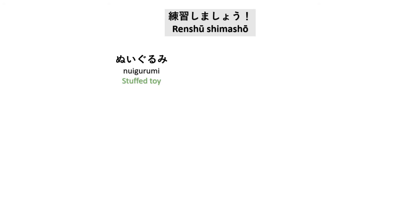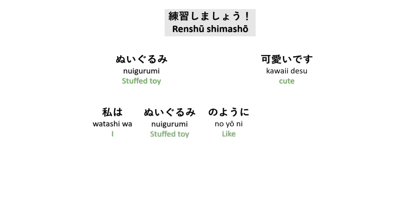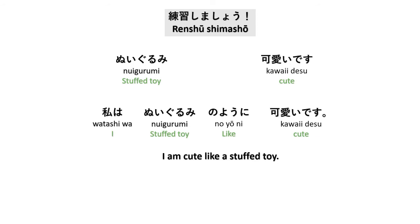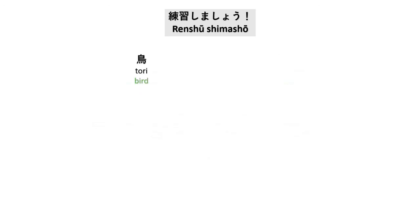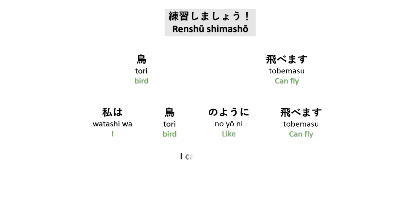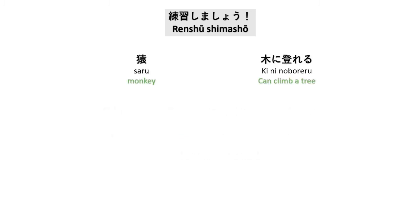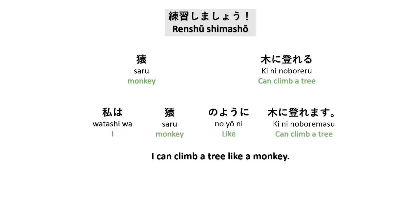Nuigurumi — stuffed toy. Kawaii — cute. Watashi wa nuigurumi no yoni kawaii desu — I am cute like a stuffed toy. Tori — bird. Tobemasu — can fly. Watashi wa tori no yoni tobemasu — I can fly like a bird.